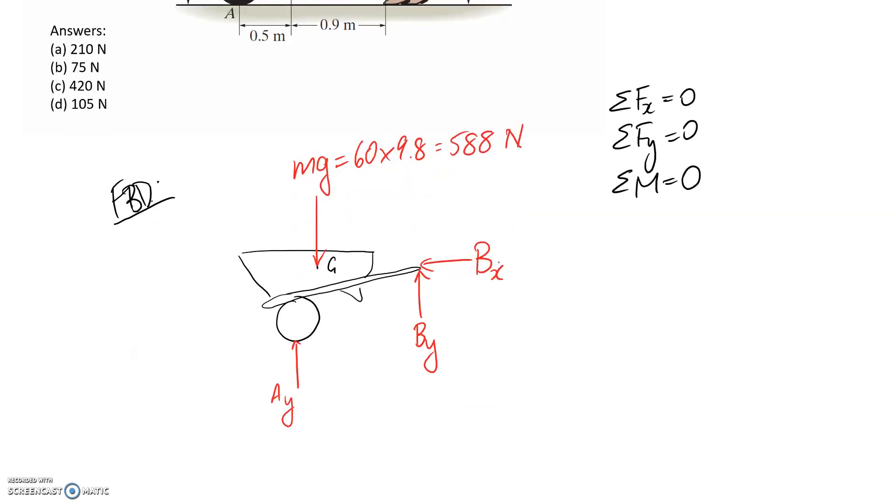So what we're interested in is figuring out Bx and By, but I think the easiest starting point would be to sum moments and if we sum about this point here B to be equal to zero, we should be able to figure out Ay as a starting point, and then we can go back and figure out Bx and By using these other two equations.